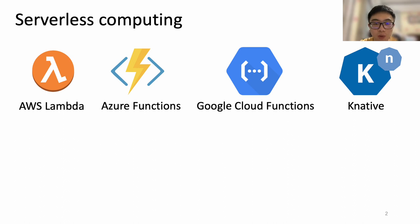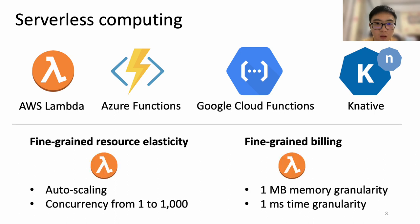Recently, serverless computing is becoming an exciting cloud computing paradigm. Many cloud providers and open-source communities are providing serverless platforms such as AWS Lambda, Azure Functions, and so on. As the core of serverless computing is fine-grained resource elasticity and fine-grained billing, the resource elasticity enables users to easily scale up and down, and the billing policy ensures charges are only incurred for active running, with 1 megabyte and 1 millisecond granularity, which makes serverless computing very cost-effective.